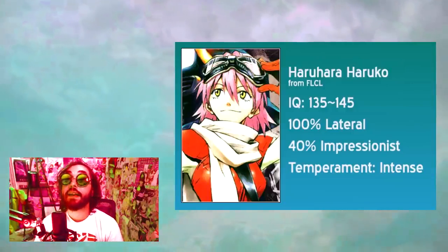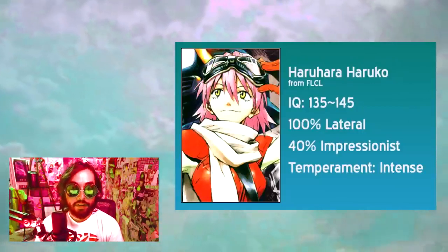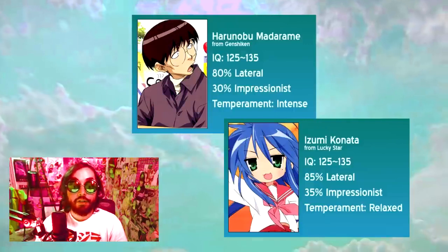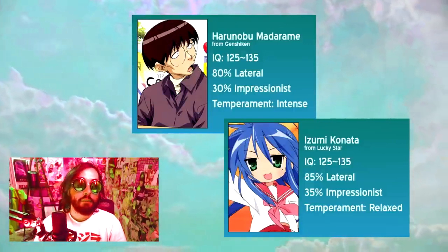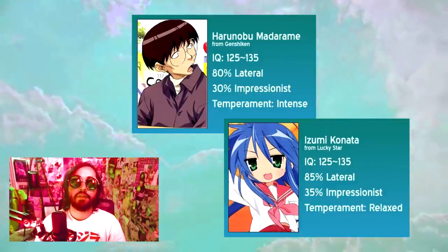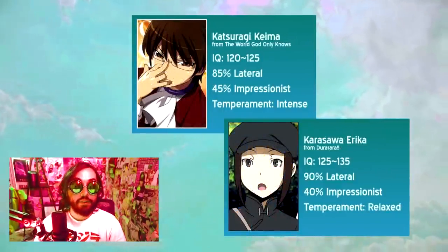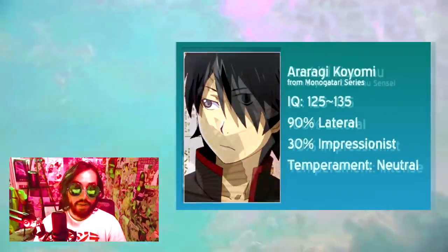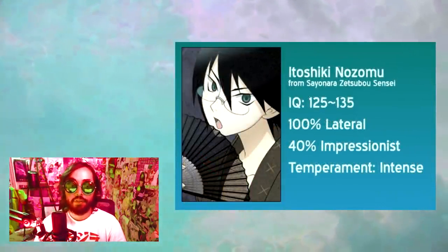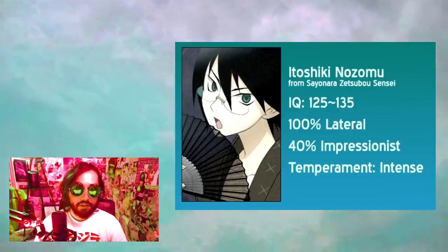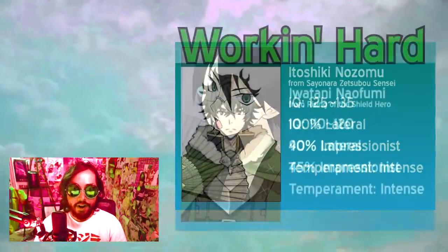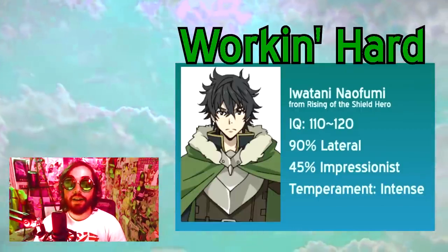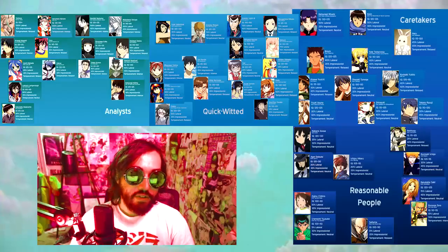Haruko from FLCL is similarly rambunctious, having an easy time manipulating a naive child like Naota, but in the end she underestimates him. In more realistic contexts, these characters are most often obsessive otaku with a propensity for long-winded analytical diatribes. Madarame from Genshiken is the realist take, while Konata from Lucky Star mercifully moe-fies it. Keima from The World God Only Knows and Erika from Durarara are somewhere in between. Araragi from Monogatari thinks exactly like an otaku but doesn't present as one. Low IQ analysts aren't common, but Naofumi from Rising of the Shield Hero would be working hard, constantly running through an angry disorganized analysis of how terrible everyone around him is.